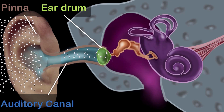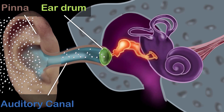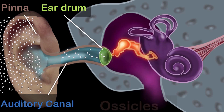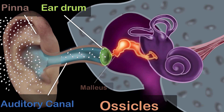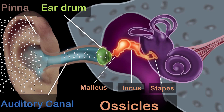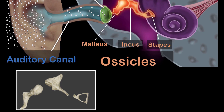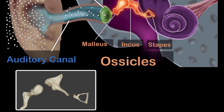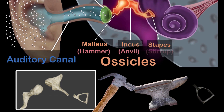This brings us to the middle ear. The middle ear consists of the three tiniest bones of the human body, and they are together called the ossicles. They have pretty cool names — they are called the malleus, the incus, and the stapes. Here is the actual picture of these three bones. Because of their shapes, they are also commonly called the hammer, the anvil, and the stirrup.